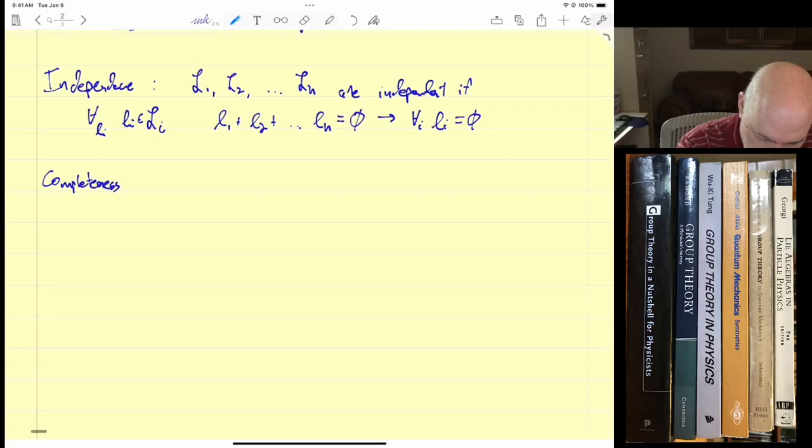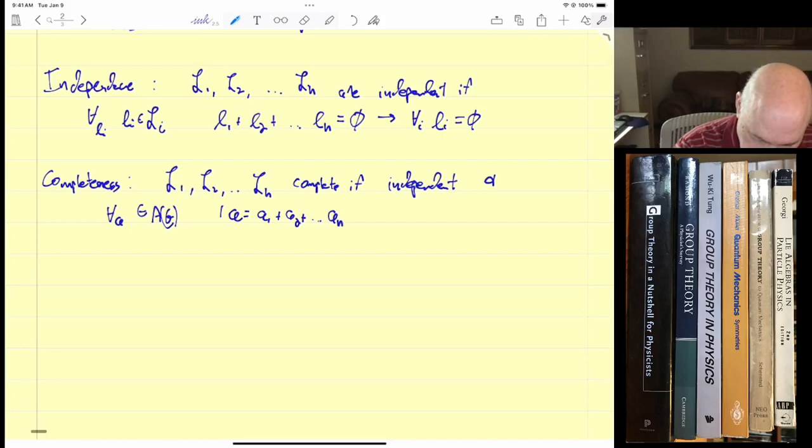And now we have completeness. And we say that L1, L2, LH is complete if it's independent and for all A in A of G, we can write A as being equal to A1 plus A2 plus dot dot dot AH. I'm going to box this equation because I need it later. And I'm going to denote it by star star star. This is H, not N. Where AI is an element of the left ideal LI.